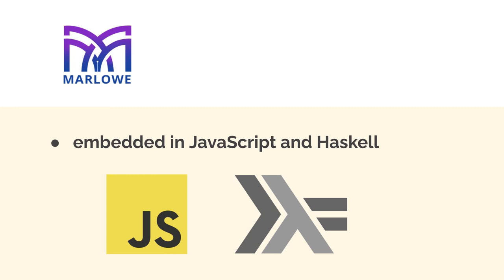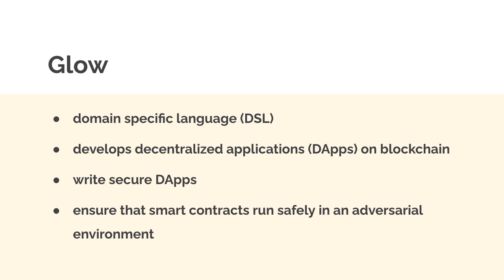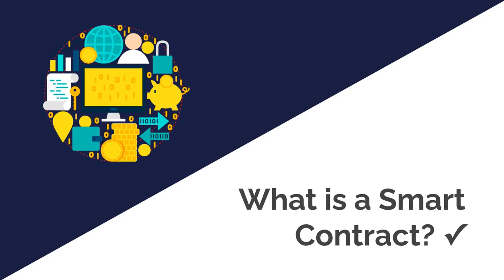There is also the option of Marlowe embedded in JavaScript. Later in this course we're going to learn more about Haskell before we start building contracts with Marlowe Haskell, because Haskell can take some time to understand if you've never seen it before — it is a functional language and we'll talk more about that when we get there. There's also Glow, a newer domain-specific language for developing decentralized applications and writing secure dApps. Glow ensures smart contracts run safely in an adversarial environment.